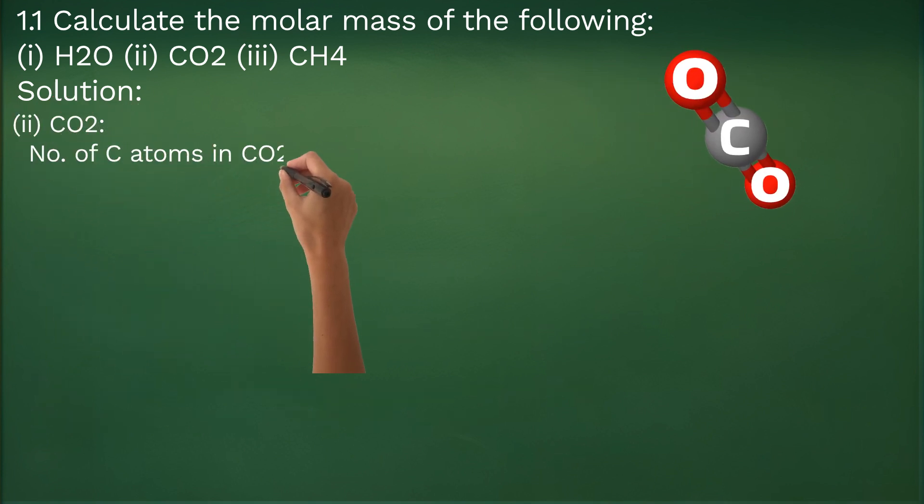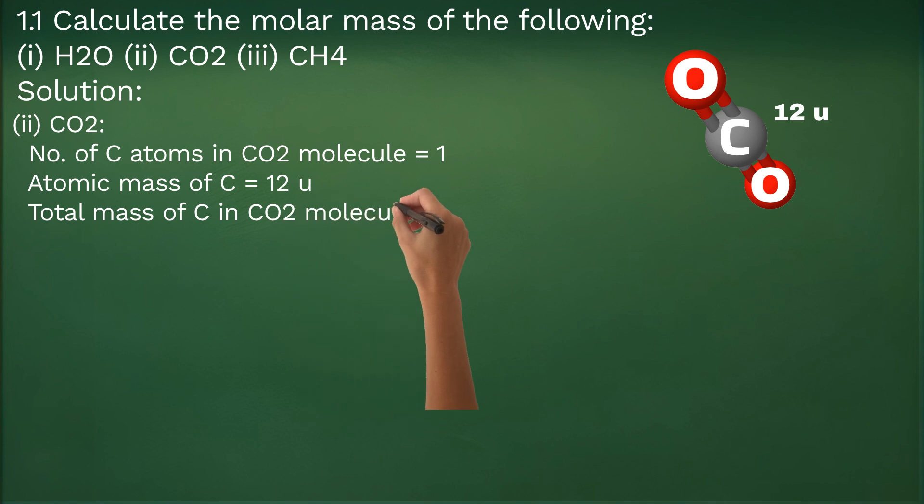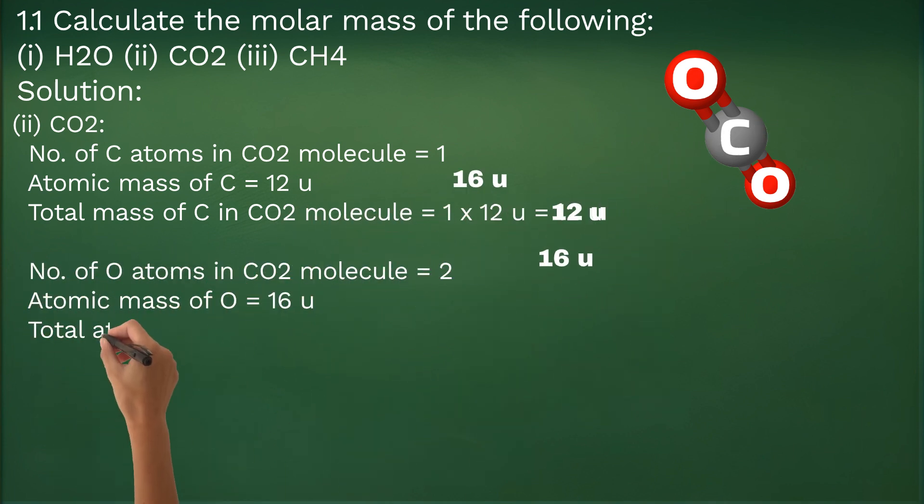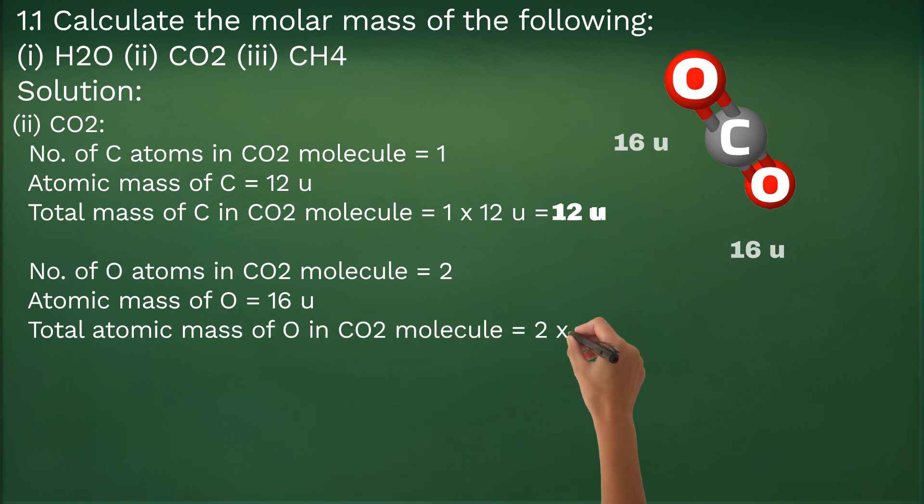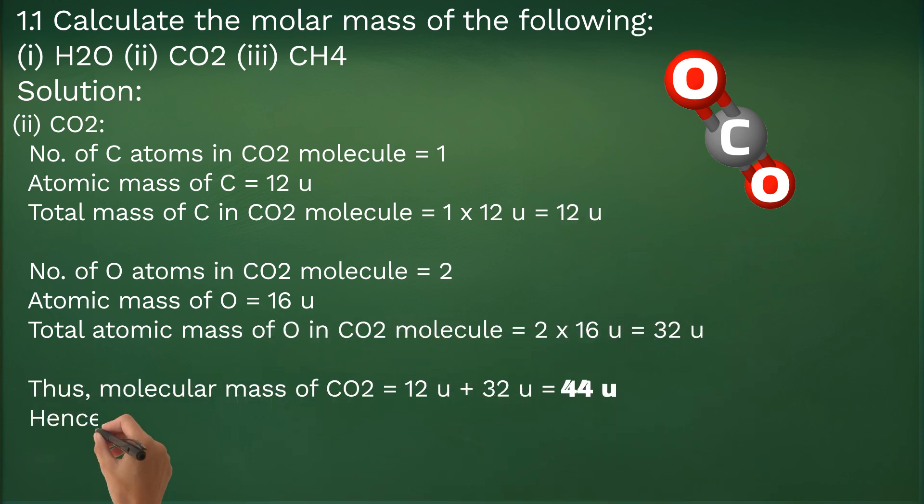Next is CO2. There is one carbon and two oxygen atoms in it. Atomic mass unit of carbon is 12U, while that of oxygen is again 16U. Thus molecular mass of CO2 comes out to be addition of 12U and 2 times 16U, that is 44U. Hence molar mass of CO2 is 44 grams.